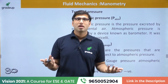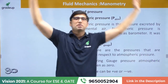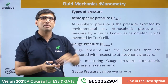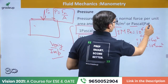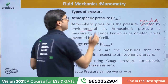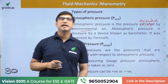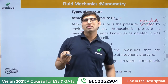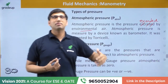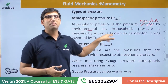Atmospheric pressure is the pressure exerted by the environmental air around us. It is measured by a device known as a barometer, invented by Torricelli — also called the Torricelli barometer. That is good general knowledge. The next type of pressure is gauge pressure.